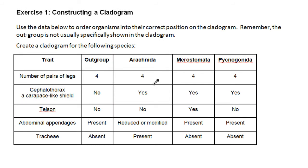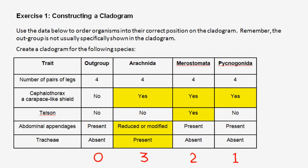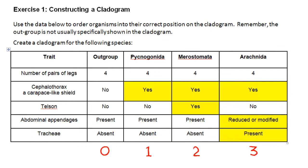Here is our first cladogram problem. Remember not to put the outgroup as part of a living species. We have the outgroup and three other species. Our first job is to work out the differences in each of these species from the outgroup, which are shown in yellow. From this we can make a set of totals. At this point, I often like to rearrange these to be in order from smallest to largest, which looks like this.